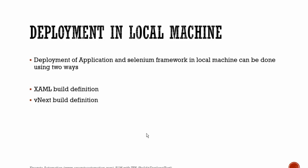Deployment of our application and Selenium framework on a local machine can be done in two ways: by creating a build definition using XAML, or by creating a build definition with vNext. We are going to use vNext build definitions throughout this video series. We won't be talking about XAML build definitions at all since vNext is the future of Team Foundation Server, and TFS 2015 has this great vNext build definition feature.